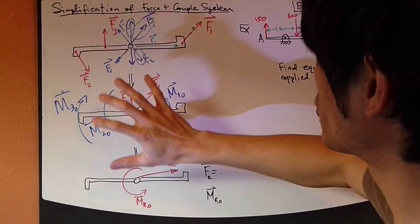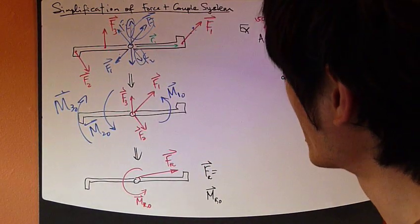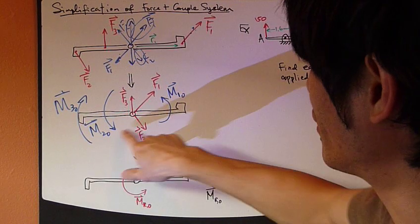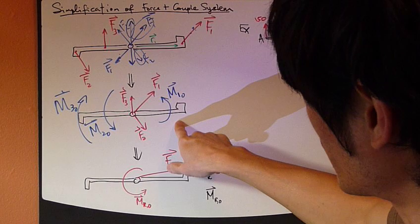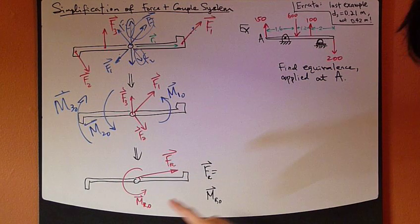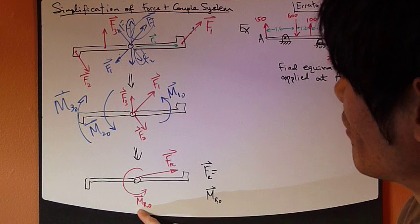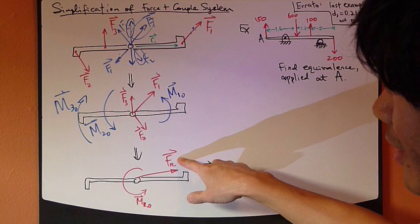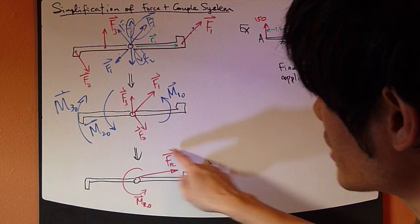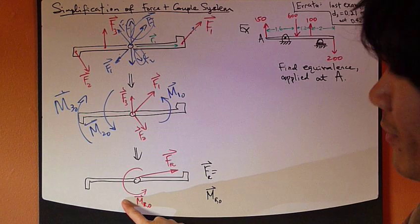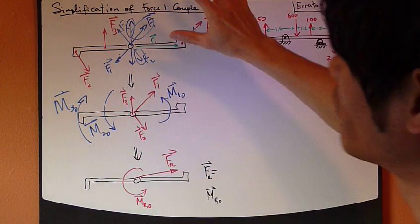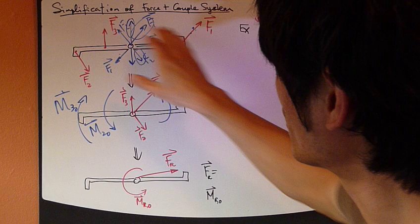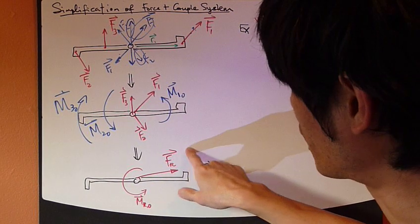So now these two pictures are equivalent. To further reduce it, we can combine all three couple moments into one single couple moment. And for the forces, just do a vector sum to come up with a resultant force. So these two — one single force and one single moment — is the final equivalent result, equivalent to the original picture with the three forces. We can simplify a force system to a force and a couple.